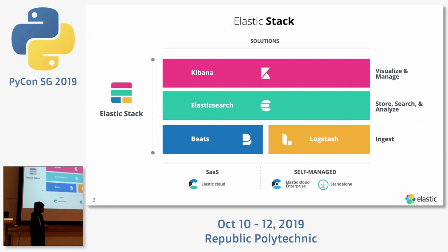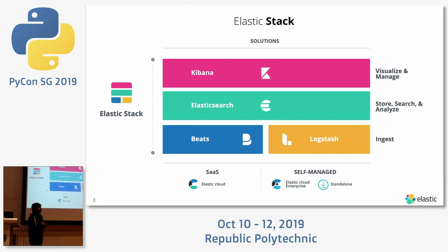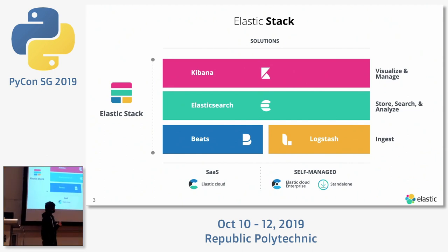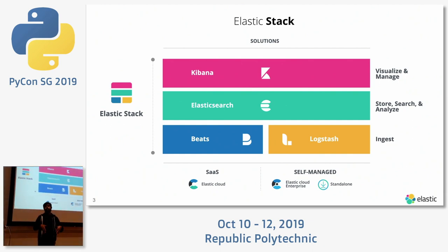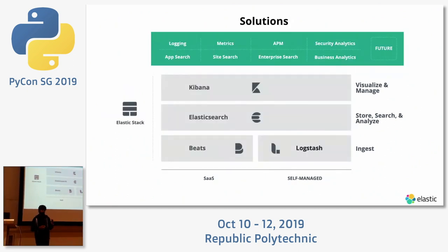Beats is a library that acts as an agent — it installs on your server and ships data from your source to the destination. It works like a push model rather than Logstash's pull model. Logstash still has many use cases. Elasticsearch is a distributed REST-based storage engine. Kibana is a visualizer into Elasticsearch — it's like your window into Elasticsearch. Together, this is called the Elastic Stack.